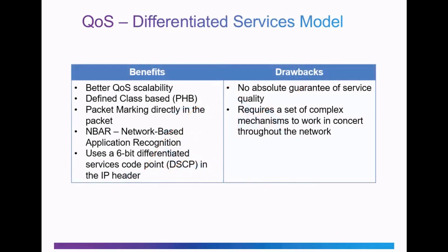Looking at the differentiated services model, we can see some of the benefits and drawbacks. Under benefits, the differentiated services model provides better QoS scalability. It is a defined, class-based approach, defining the policy and priority at the routers, known as per-hop behavior, or PHB. It uses packet marking directly in the packets — packets are marked at the routers. It can also use the NBAR or NBAR2 network-based application recognition services. It uses the 6-bit differentiated services code point, or DSCP, in the IP header, and is also used with IPv6.